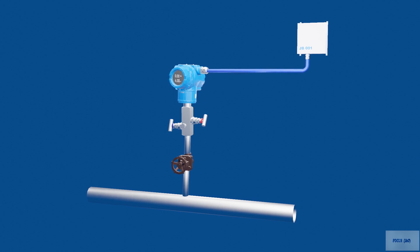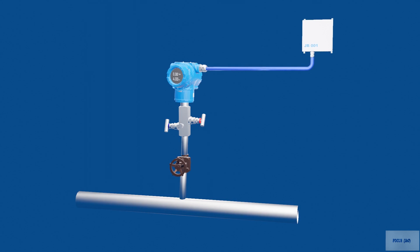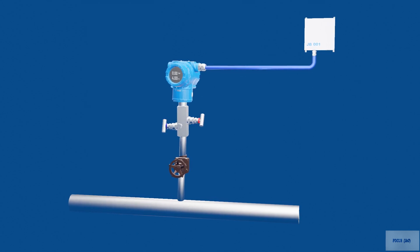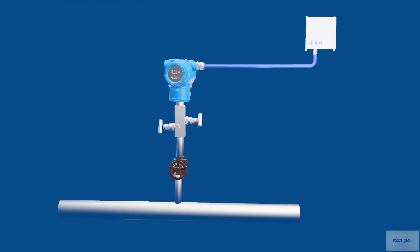In this video, we will explain how to troubleshoot a Rosemount 3051 pressure transmitter. Additionally, this information can be useful when working with other brands, for instance ABB and Siemens.